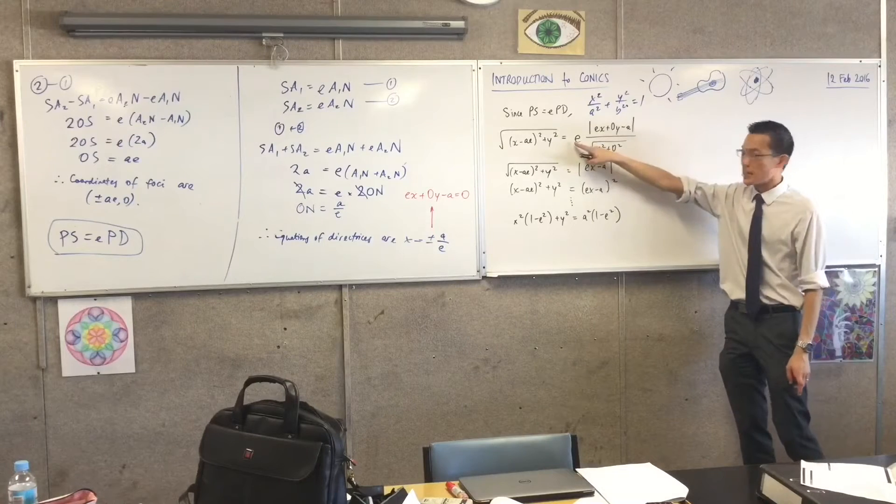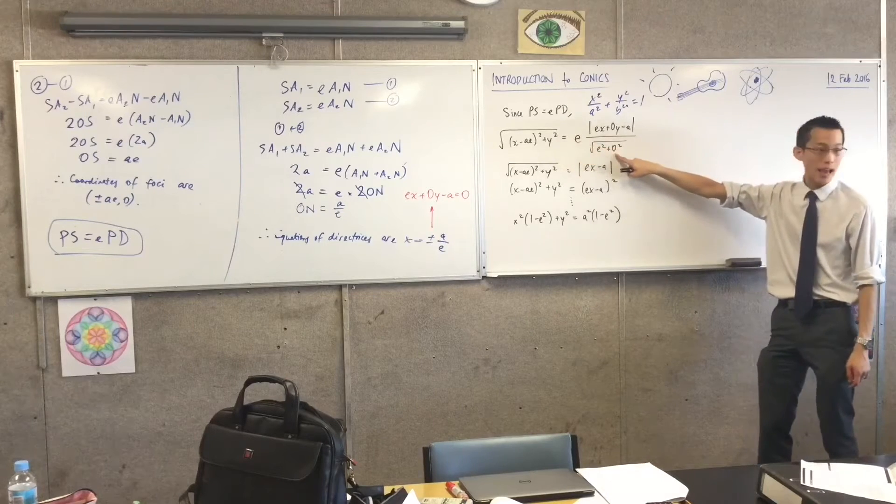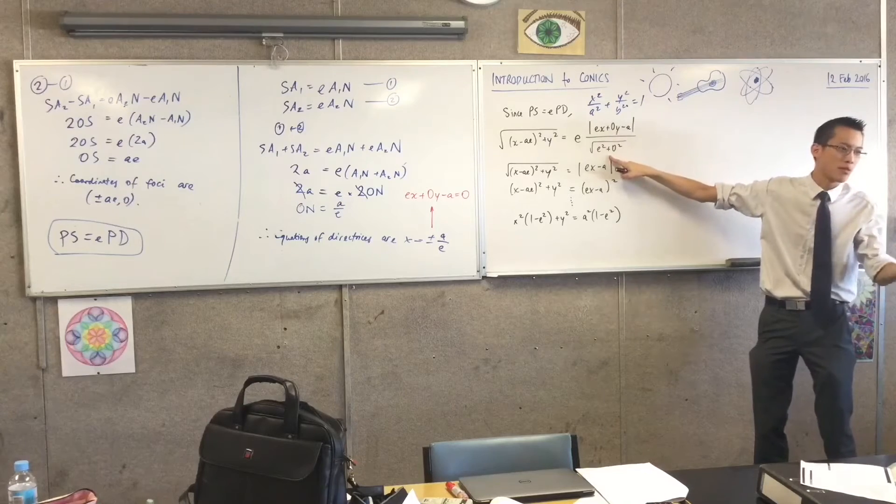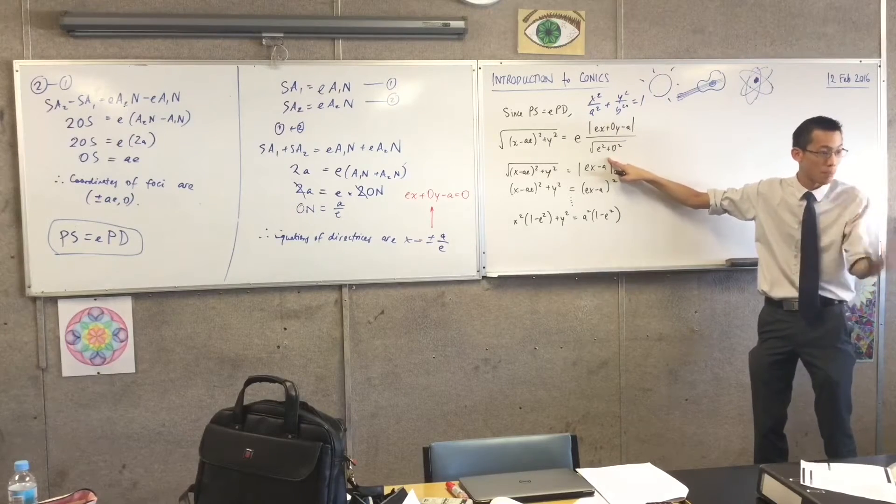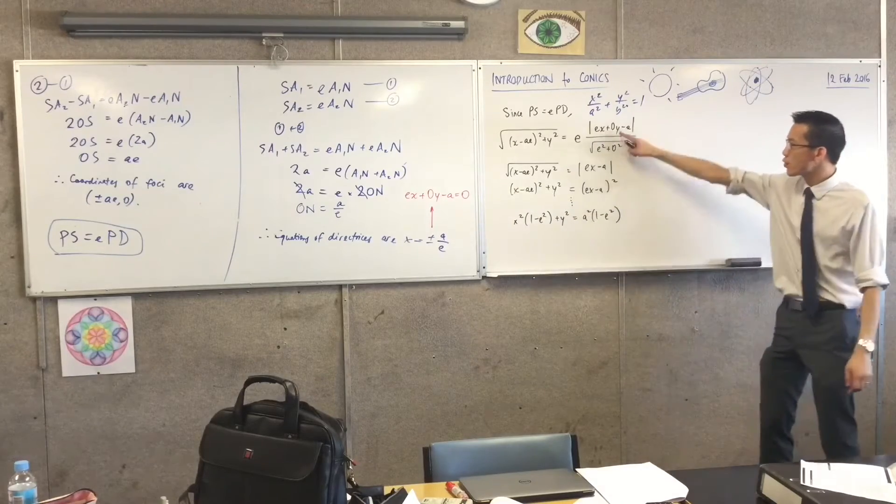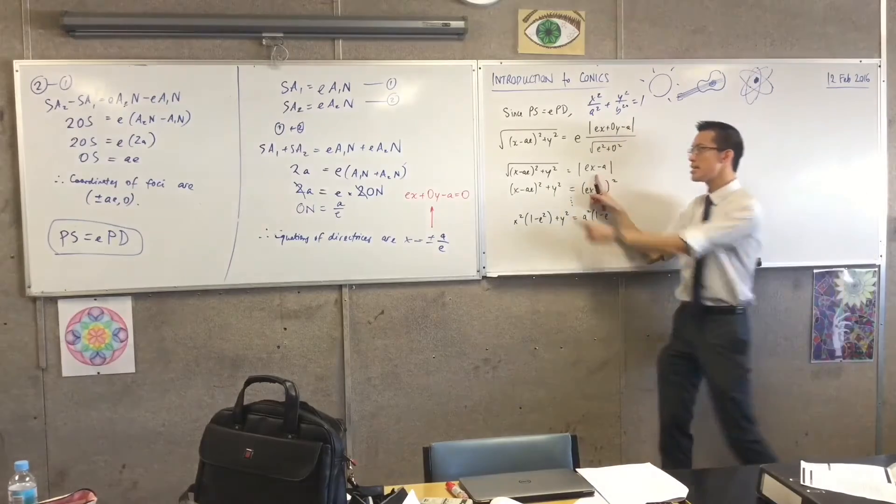I see that I've got an e divided by this e, right? Well, it's actually the absolute value of e, but e is a ratio, it's a positive number, so that's why I can cancel those.